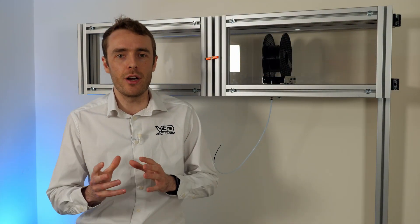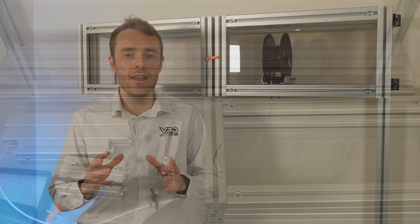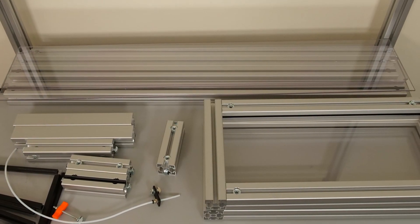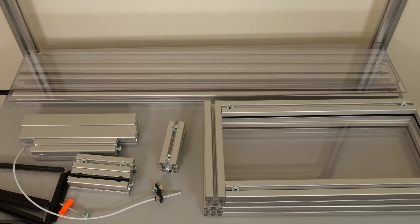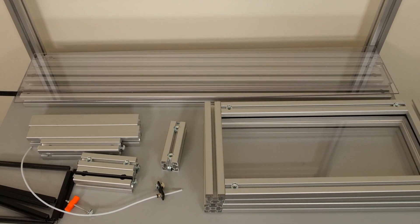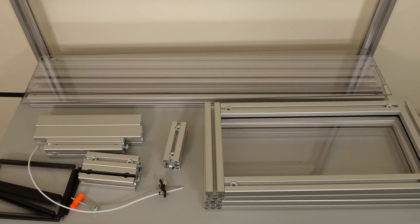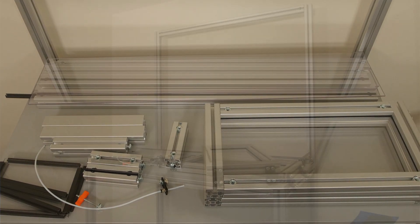The enclosure is comprised of basically seven key elements. The frame, the panel material, the panel seal, the door seal, the door latch, a filament pass-through and spool holder.